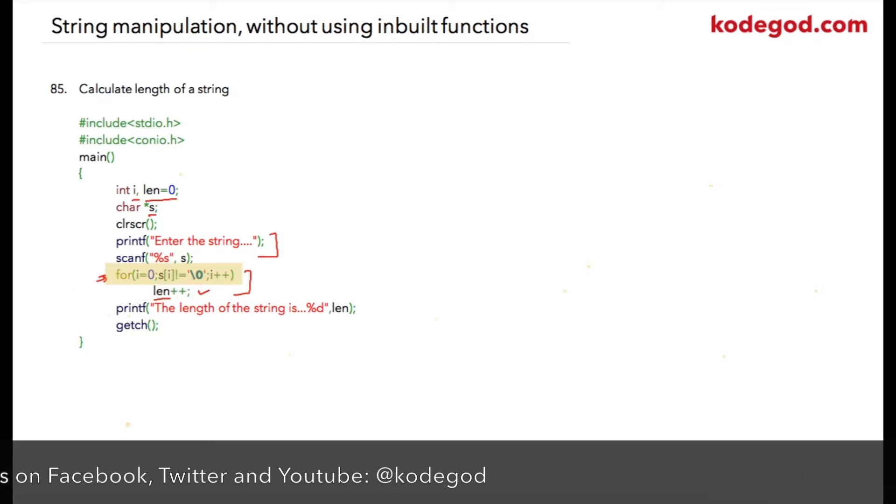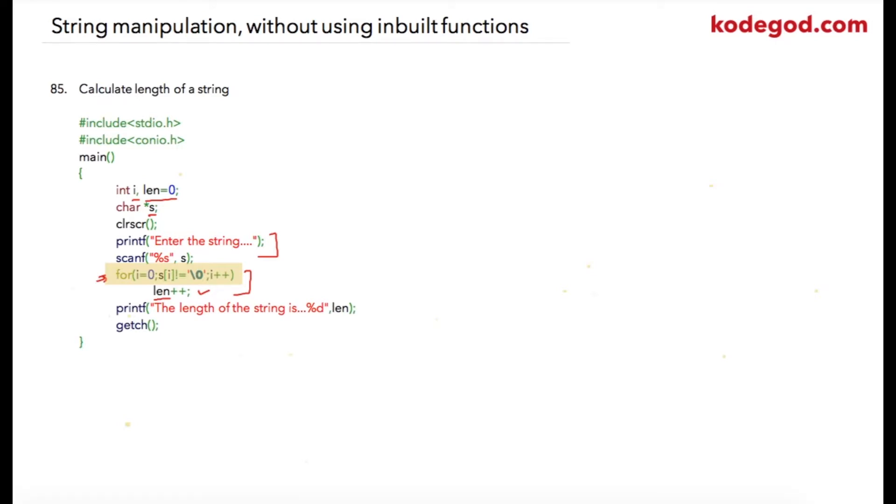Once controller reaches the null character, this for loop will be completed and the controller will come out of this for loop. After that, we'll just print 'the length of the given string is %d' and %d will be replaced by the current value of length.